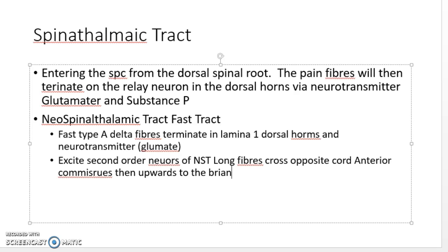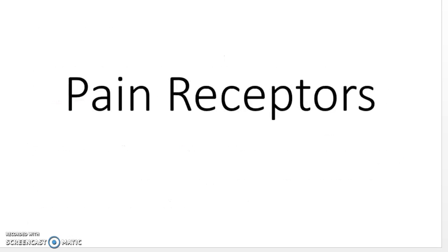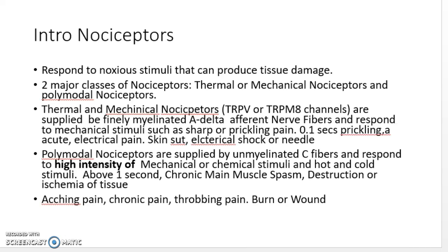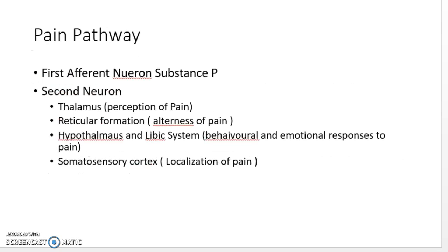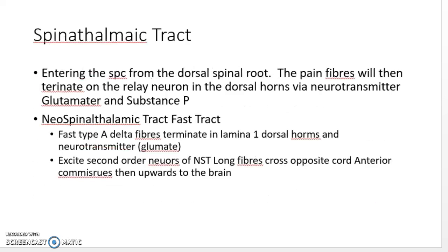This video is getting long, so a part two will be made to continue. In summary: nociceptors come in two types — mechanical/thermal and polymodal — and can be stimulated by mechanical, chemical, thermal stimuli. They are naked nerve endings that cannot adapt. It's important to know fast and slow pain, the pain pathway from the first neuron through the thalamus, reticular formation, and limbic system to the somatosensory cortex.